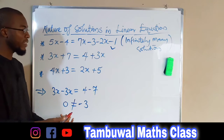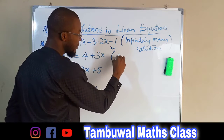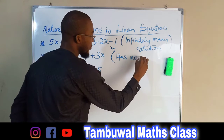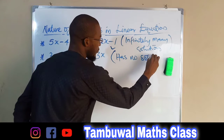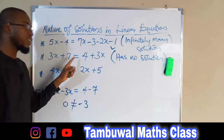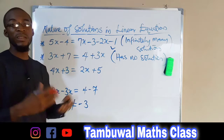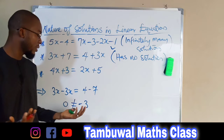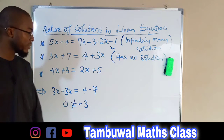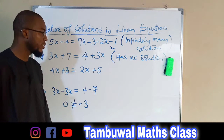We conclude by saying this equation has no solution. The unknown variable suddenly disappeared, and the left hand side is never equal to the right hand side. This is another nature of solution for linear equations.